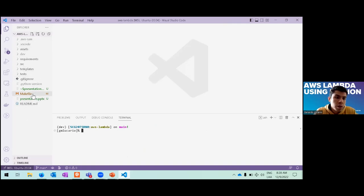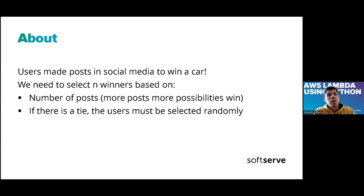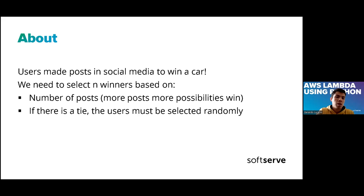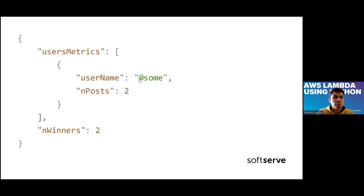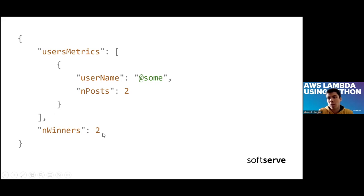Here is our demo example. We have a project where the main idea is that users make posts on social media to win a card. We need to select winners based on two things: the number of posts the user made — more posts means more chances to win — and if there is a tie, users are selected randomly. The payload we receive includes user metrics: the names of users, the amount of posts each made, and the number of winners the client wants.